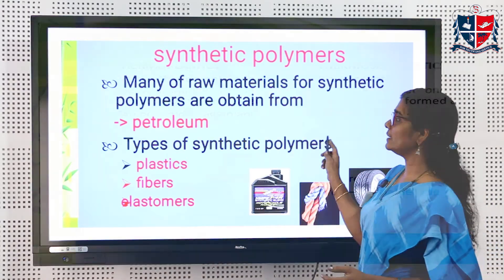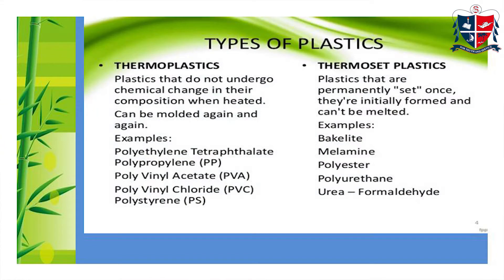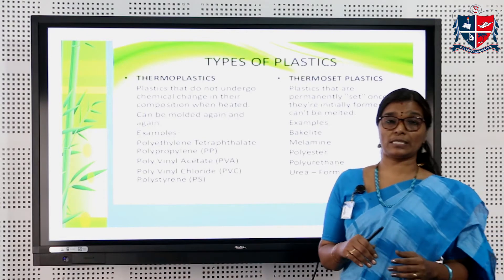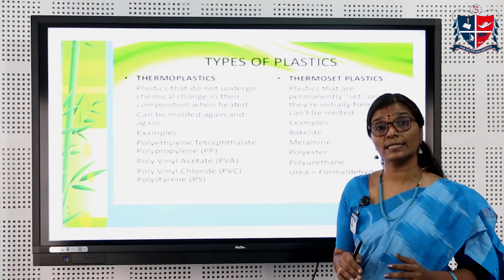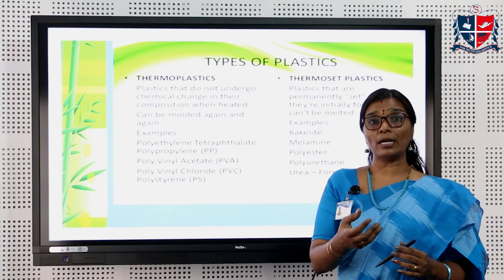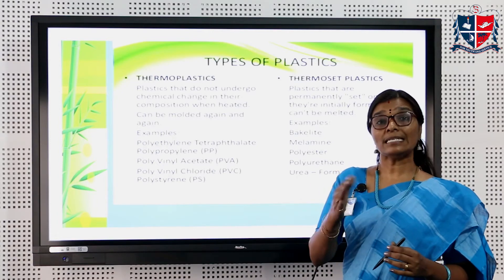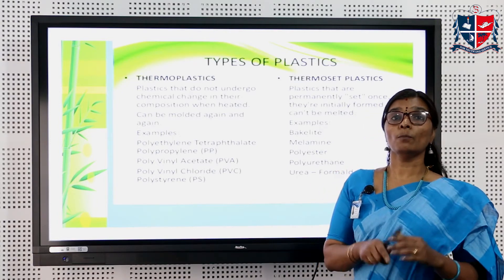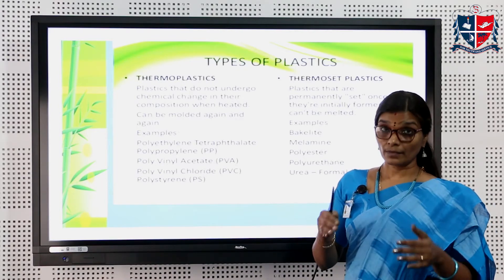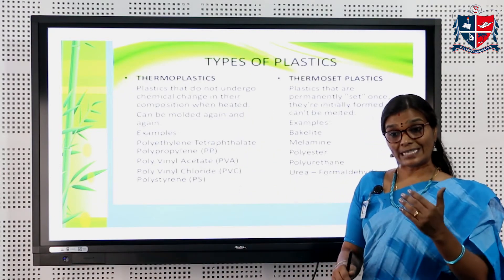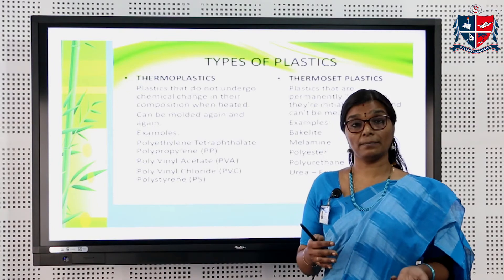Plastics are further divided into two categories based on their behavior towards heat: thermoplastics and thermosetting plastics. When you heat a thermoplastic polymer, it becomes soft, and on cooling it becomes harder. These types of polymers can be molded into any desired shape and are recyclable. Such polymers are called thermoplastics.